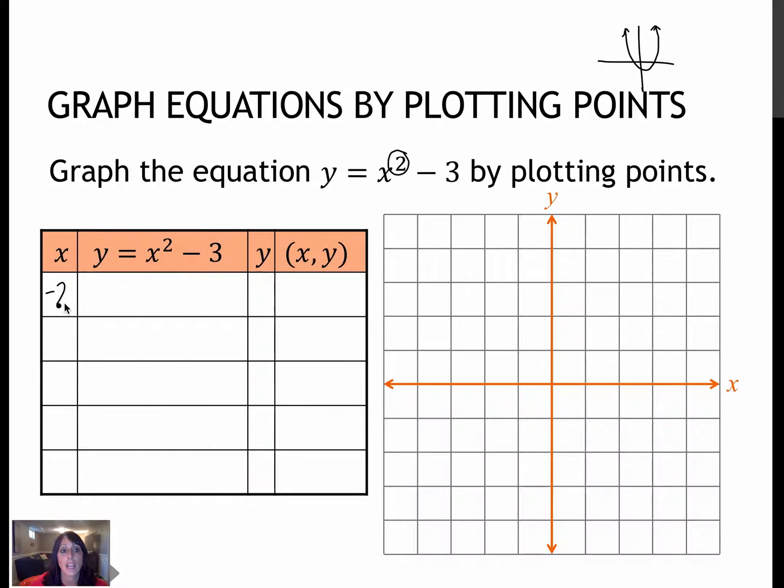So I might use negative 2, negative 1, 0, 1, and 2. So when I'm plugging in my values, I'm plugging them in again for x and then squaring and subtracting. So negative 2 squared is 4, minus 3 is 1. So negative 2, 1 would be a point that I would plot.